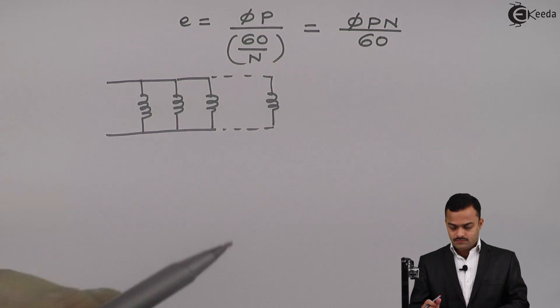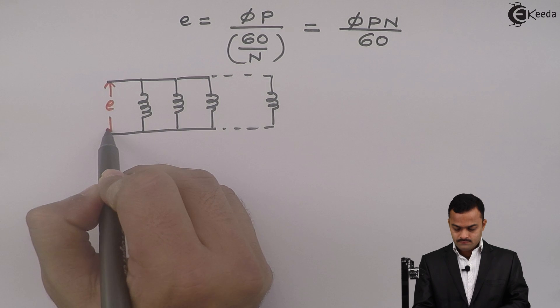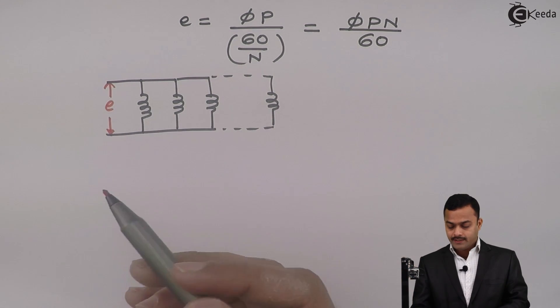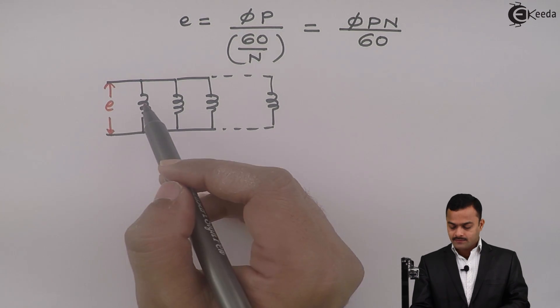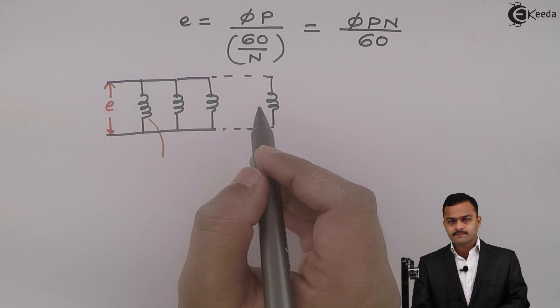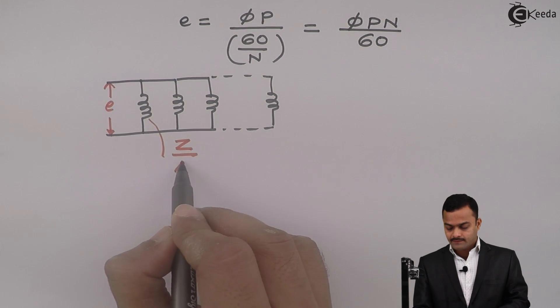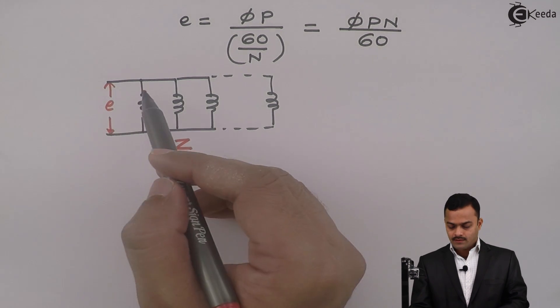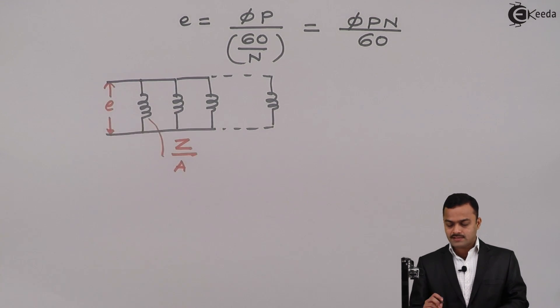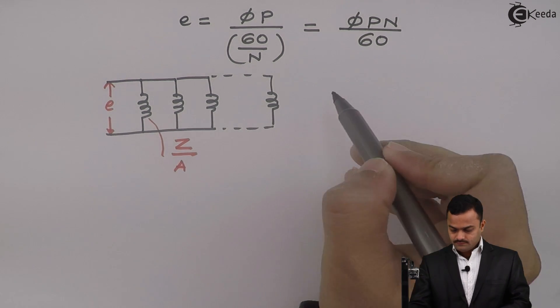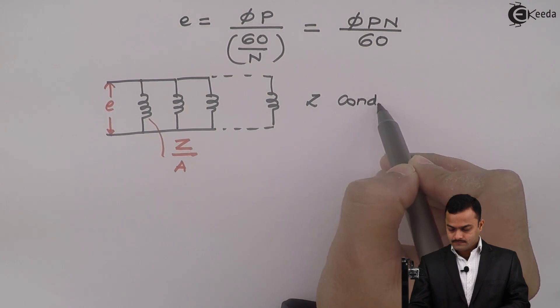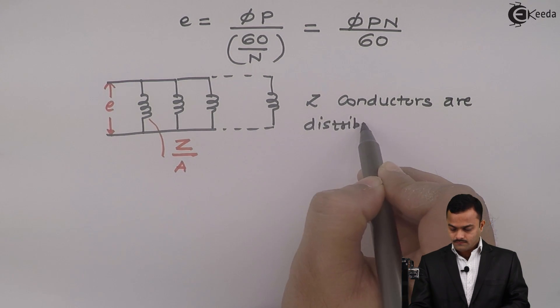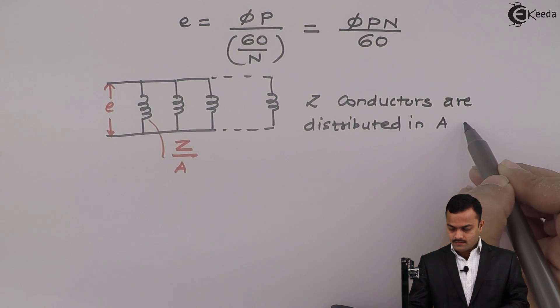And EMF induced will be like this. So, total conductors are Z and those are arranged in A parallel paths. So, effectively, this EMF will be nothing but voltage across this or this or this. So, effectively, it is Z by A because Z are the total conductors, A number of parallel paths. So, Z by A are the conductors across which EMF is induced. So, here I can say, Z conductors are distributed in A parallel paths.